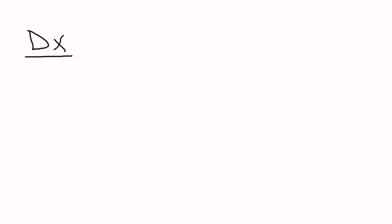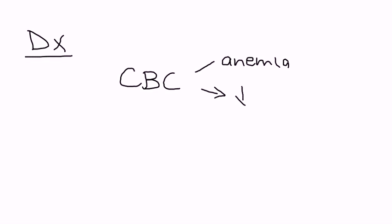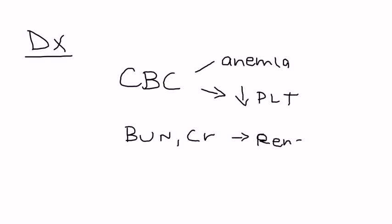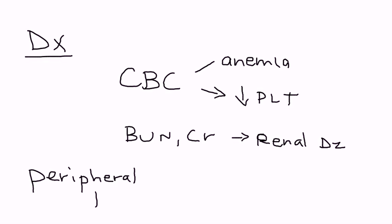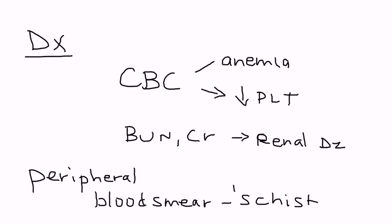For diagnosis, a CBC will detect the anemia and the low platelet count. BUN and creatinine will give you an indication of the renal involvement. There are many other tests, but one very important one that gives you a real clue is the peripheral blood smear. It will show schistocytes — schistocytosis — and if you see that on a peripheral blood smear, that's a very strong indicator of TTP.